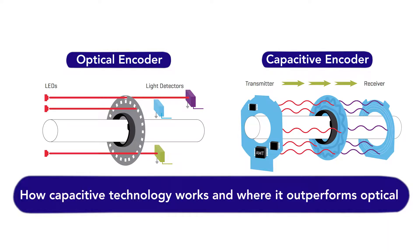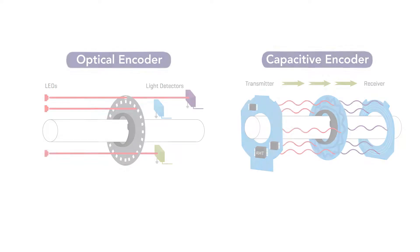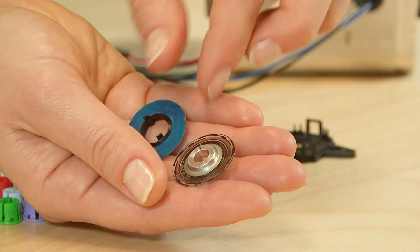Consider how capacitive technology works and where it outperforms optical. Used for years in digital calibers and as a proprietary method of measuring rotational movement, capacitive technology works by replacing a typical optical disc with a printed circuit board rotor containing a metal trace sinusoidal pattern that modulates an electrical field.